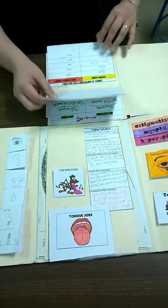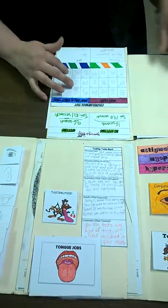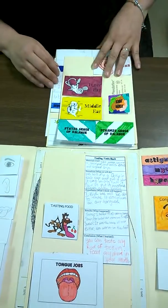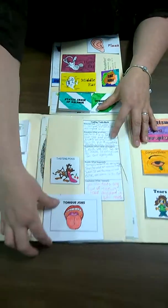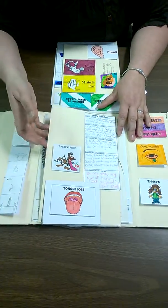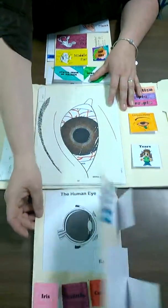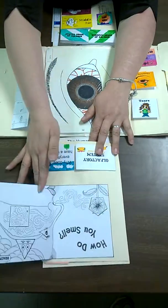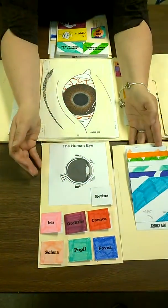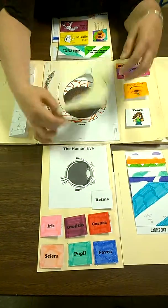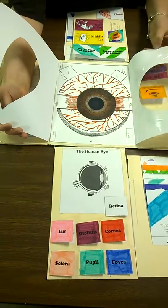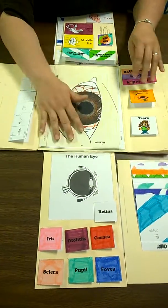This was when we did the sensory extravaganza. We had a lot of different activities for the senses. Fourteen stations in all. And then an eye chart. I'm sorry, an eye model.